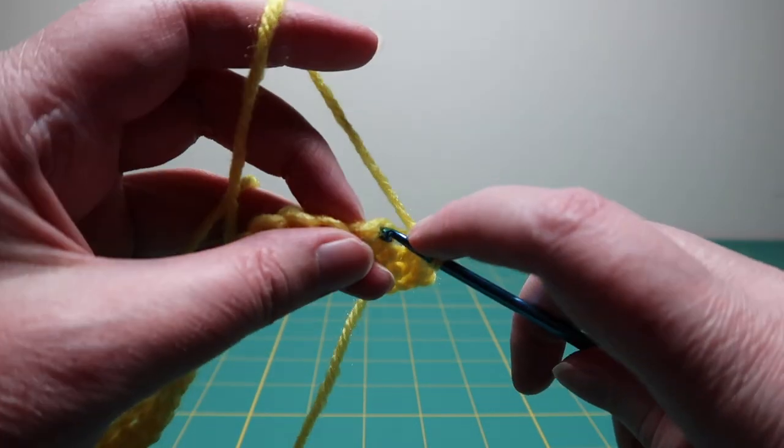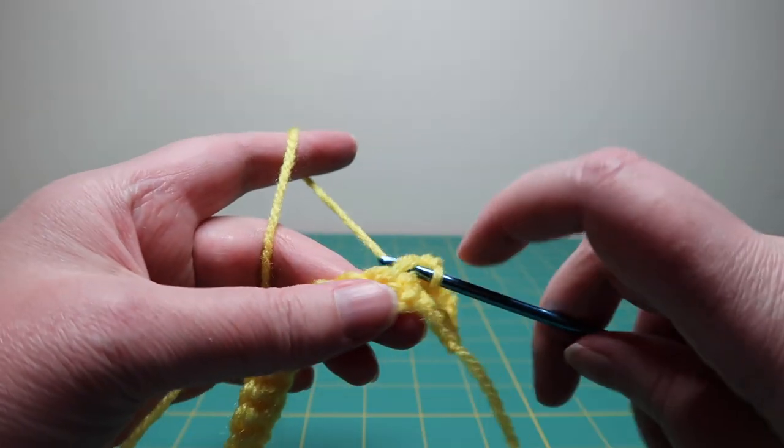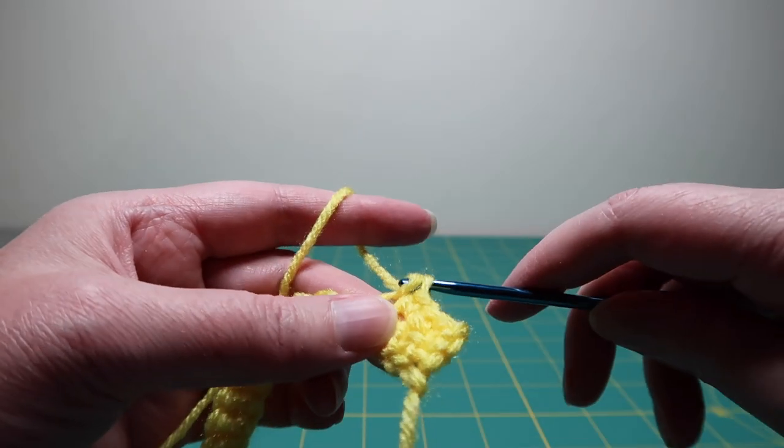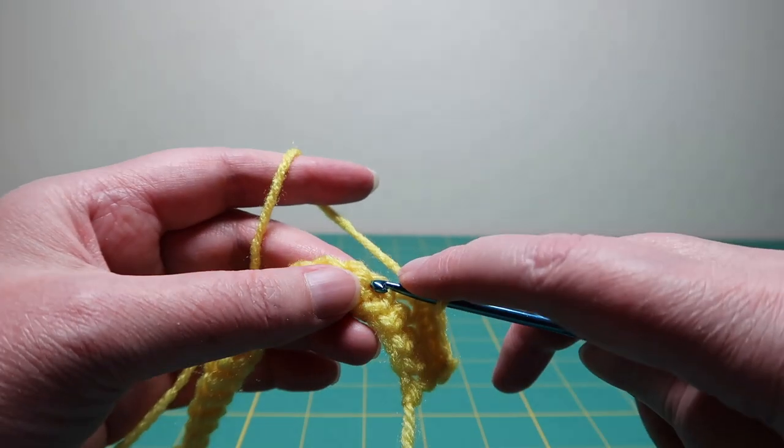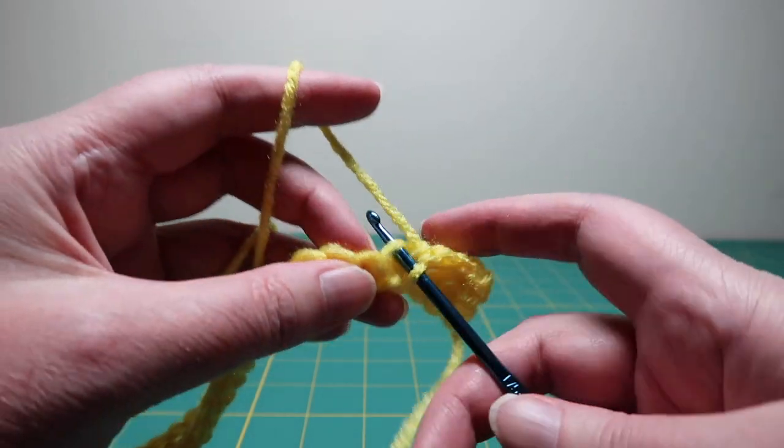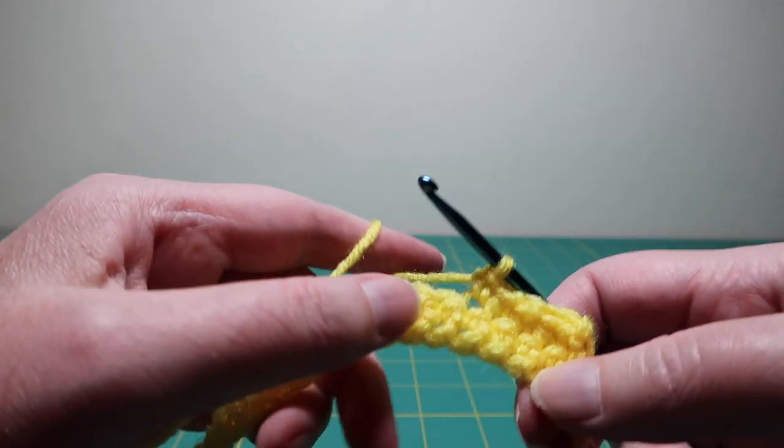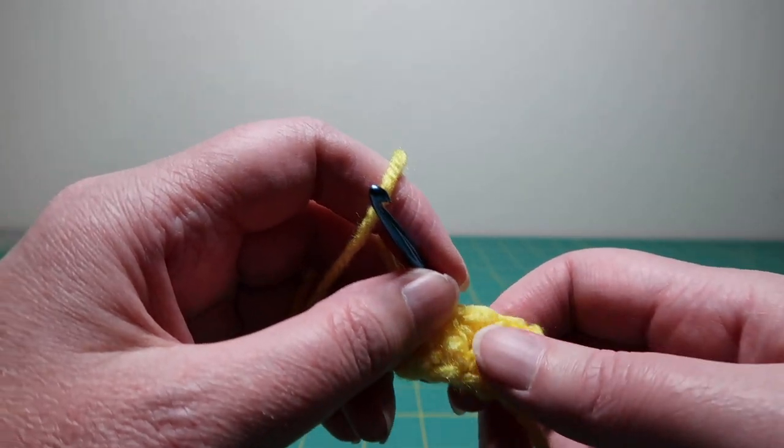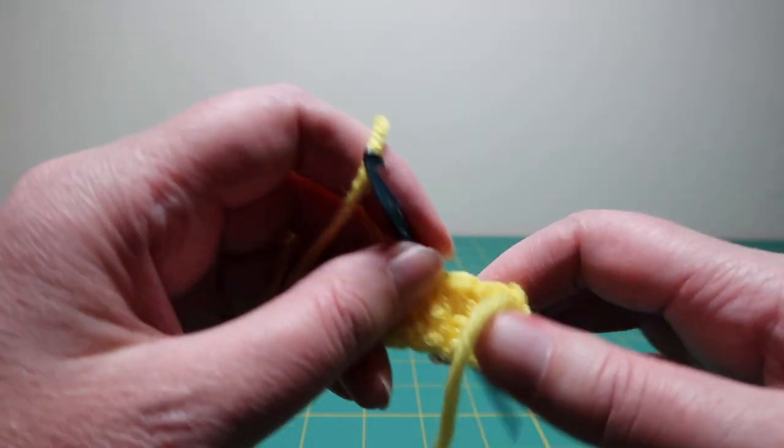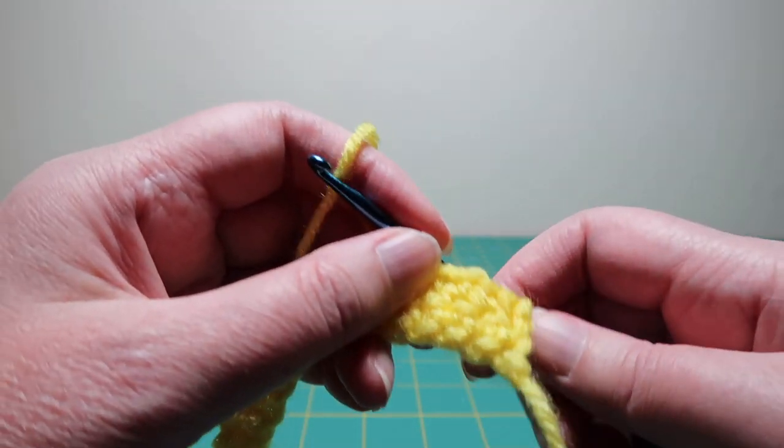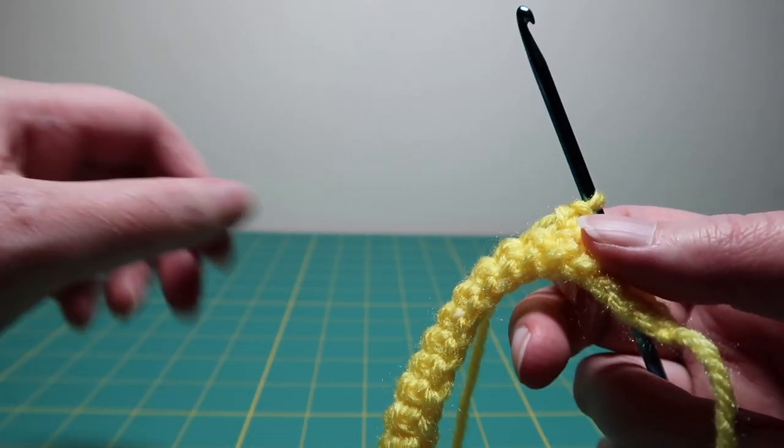And if you keep doing that all the way to the end of the row, and then do the same thing, chain one and turn your work. The reason for doing it through only one of the loops is it makes it a little bit softer, a little bit stretchier, a little bit less stiff.